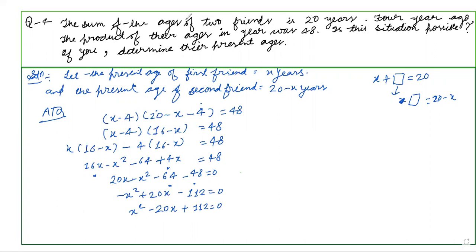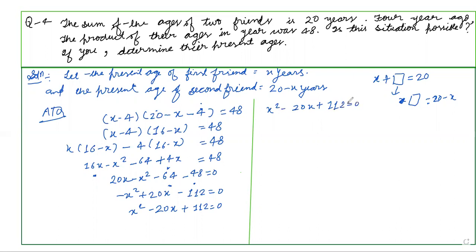Now we will check the discriminant to determine whether the given equation satisfies the condition or not — is this situation real or not? The discriminant formula is D = b² minus 4ac. From x² minus 20x plus 112 = 0, we get a = 1, b = minus 20, and c = 112.